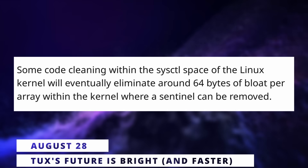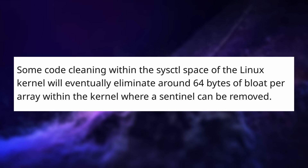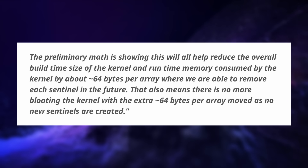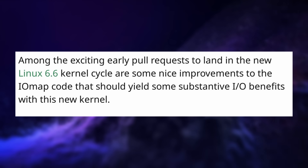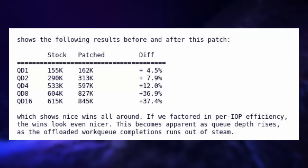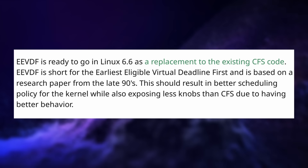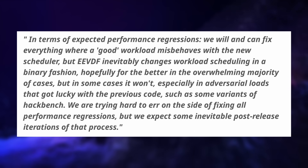For kernel 6.6 we can also expect a lot of cool stuff. Developers managed to clean up the sysctl space, reducing the space used by each array by 64 bytes, meaning both build time and RAM consumption of the kernel will be lower. On top of that we should get some nice improvements to IO performance — described by the developer as 'pretty juicy' — ranging from 4.5% faster speeds up to 37% faster. A new scheduler should also make its way to the kernel replacing the older CFS, bringing back cluster scheduling for Intel hybrid CPUs and improving the majority of workloads, though developers are also expecting some performance regressions they'll fix as identified.